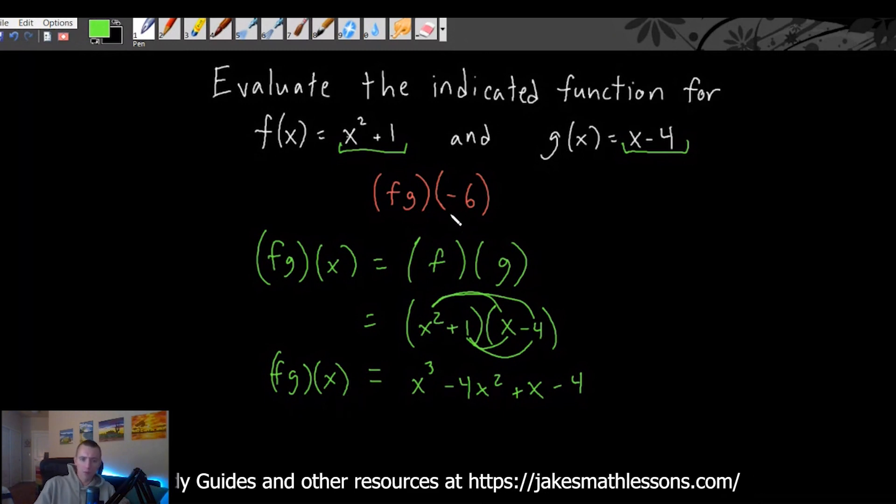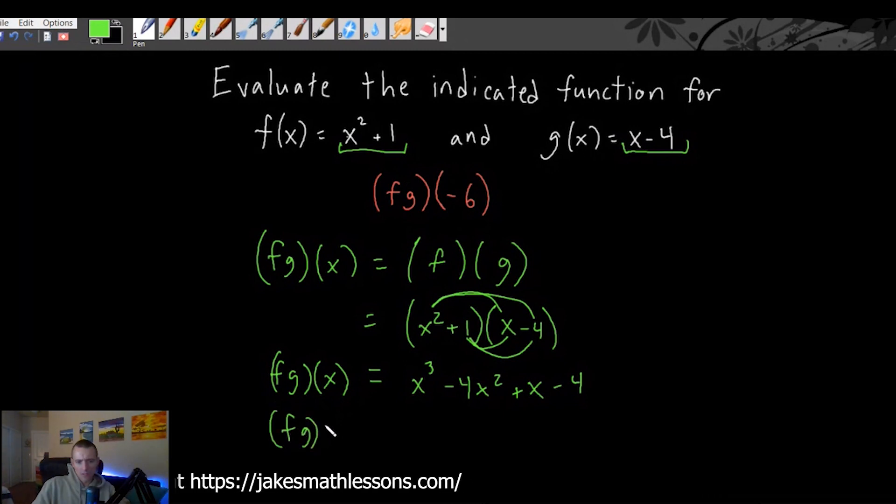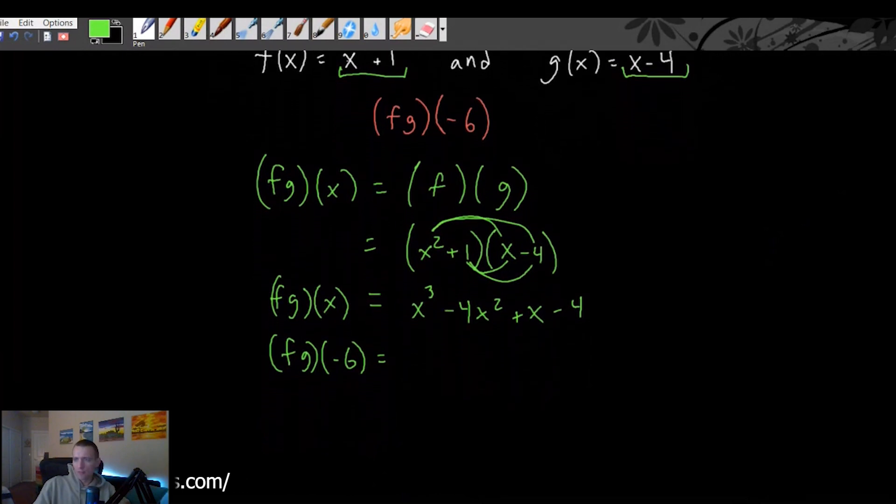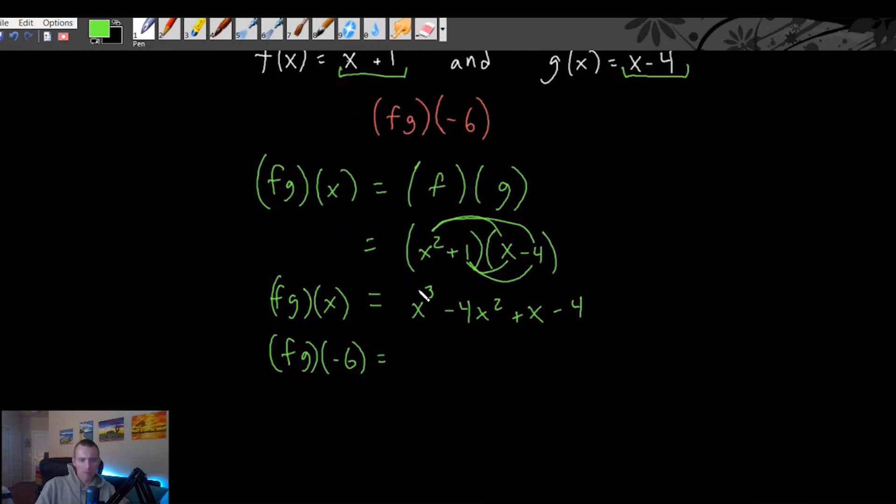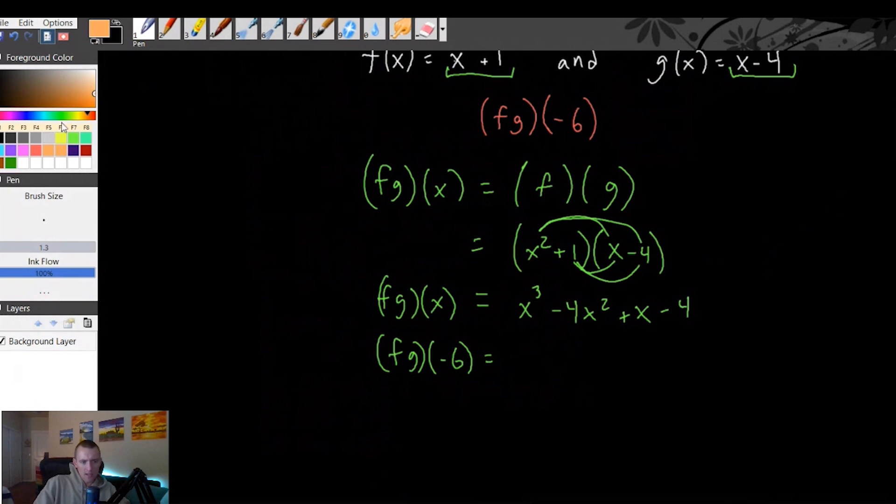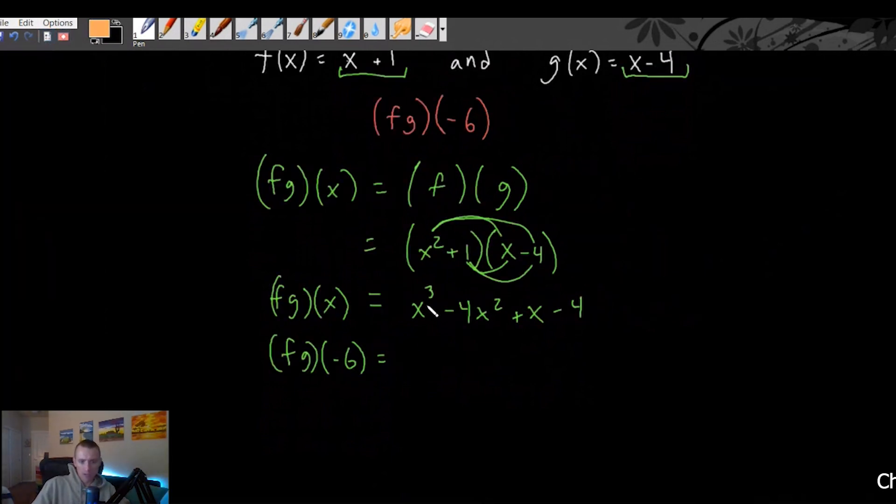But we're not done because remember, what we're looking for is f times g of negative 6. So now to find f times g of negative 6, what we need to do is take our function f times g of x that we just found here. And wherever we see an x in this function, we need to replace it with a negative 6.